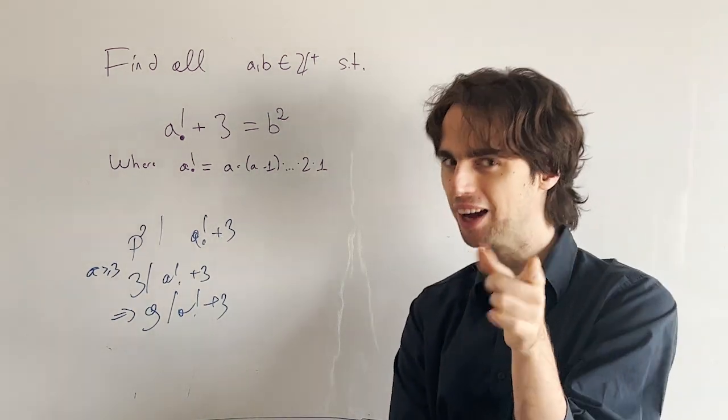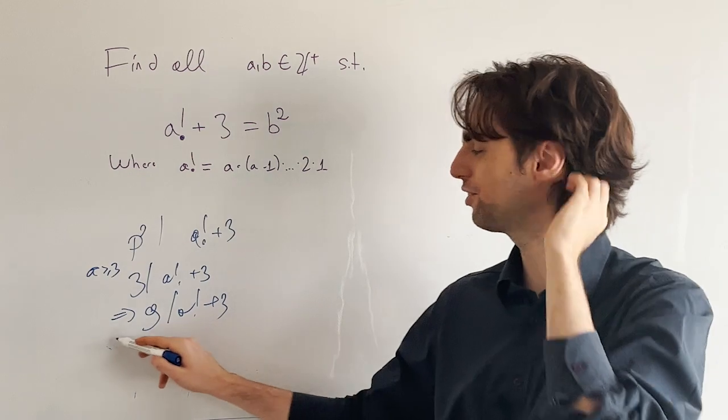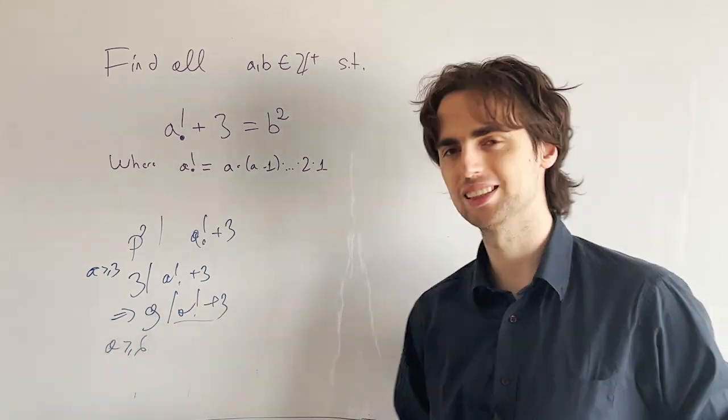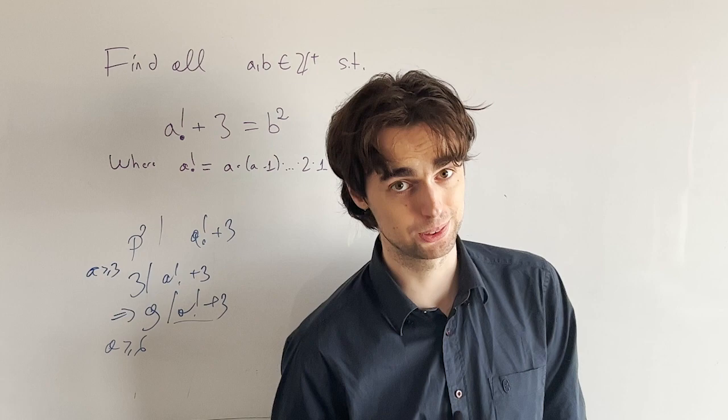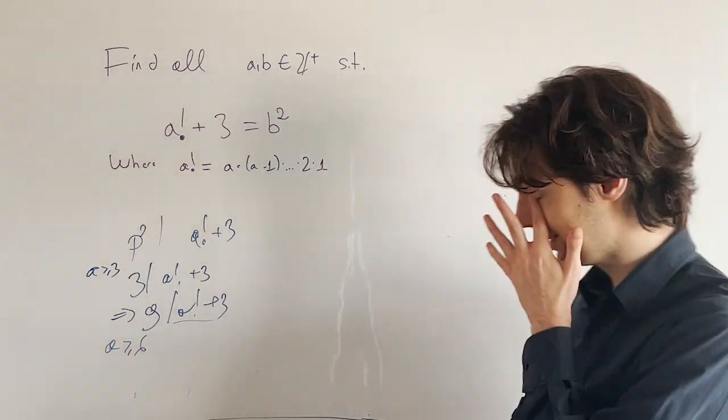However, I invite you to pause for two to five minutes and try to reach a contradiction for a greater than or equal to 6. Show that this is impossible for a greater than or equal to 6. Pause now. And here's the idea.